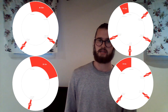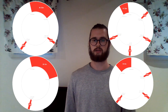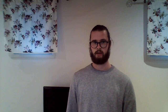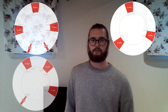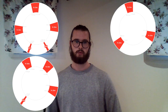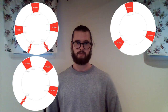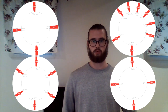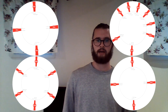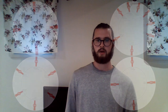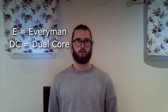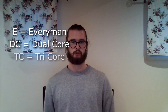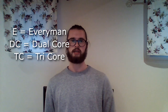The everyman group is defined as having one core sleep and a number of naps. The dual core group has two cores and a number of naps. There are also the tricore schedules, with three cores and a number of naps. And finally, the nap-only schedules, with no cores and a particular number of naps. The groups are abbreviated as follows: the everyman group is shortened to E, the dual core group to DC, and the tricore group is shortened to TC.